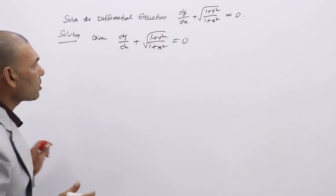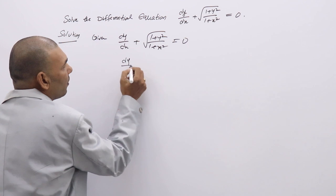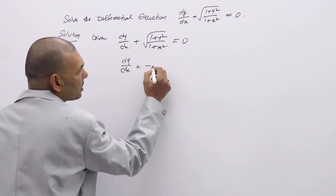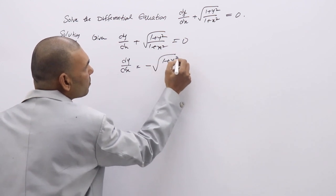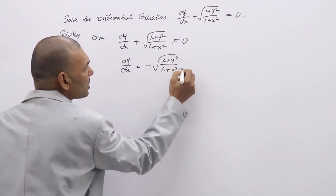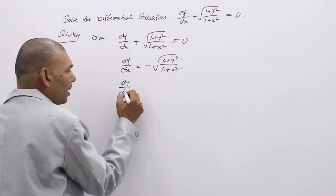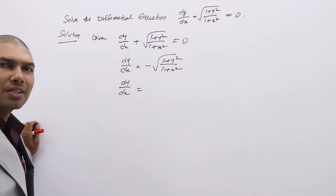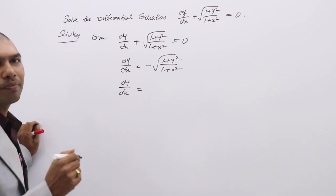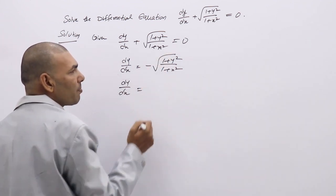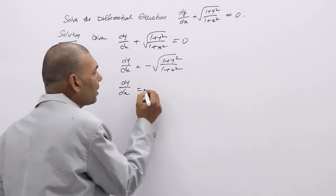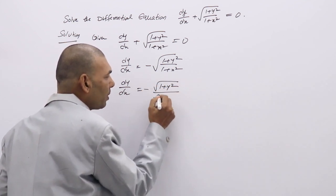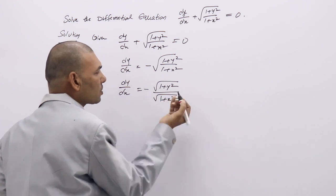How are we going to separate? Take dy/dx, and if we send the second term to the right side, we get dy/dx = −√(1+y²)/√(1+x²). Note that √(a/b) can be written as √a/√b, so the root can be separated for numerator and denominator: −√(1+y²)/√(1+x²).